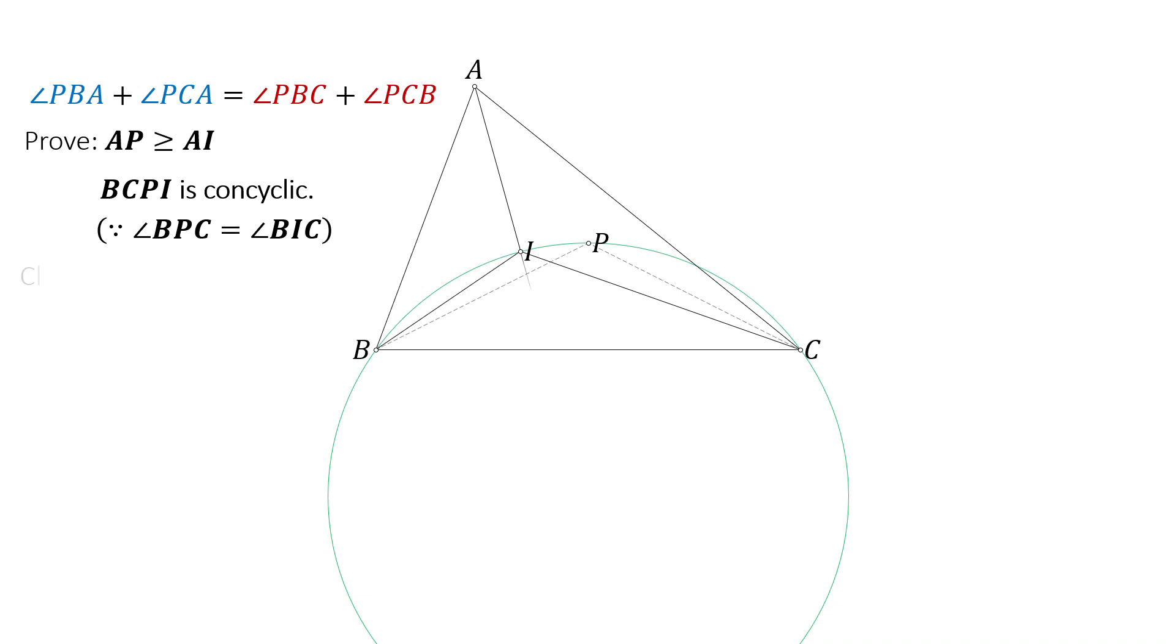Next we draw a circle through these four points. We will show that the center of this circle lies on the line AI. To prove this, we draw the circumcircle of triangle ABC. Since AI bisects angle A, it also bisects arc BC. And we call this point M.